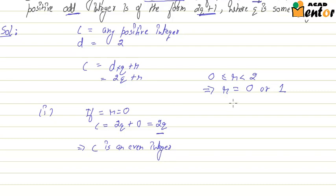And the second case would be if R is 1. Then C becomes 2Q plus 1.